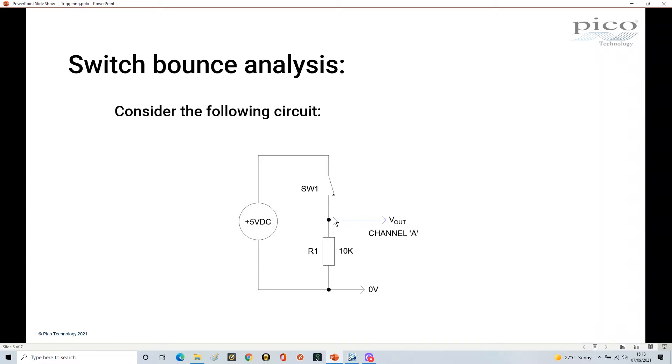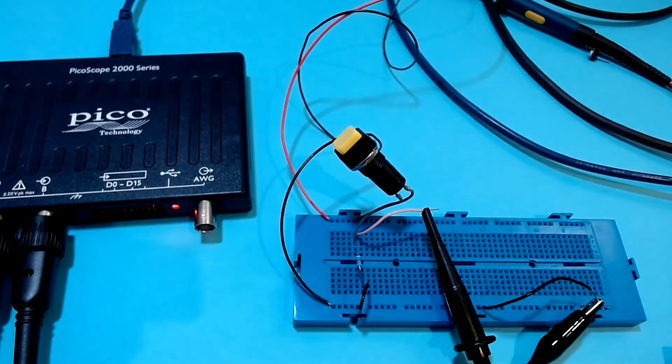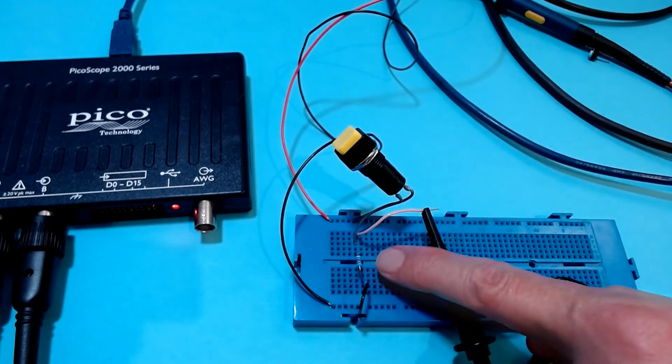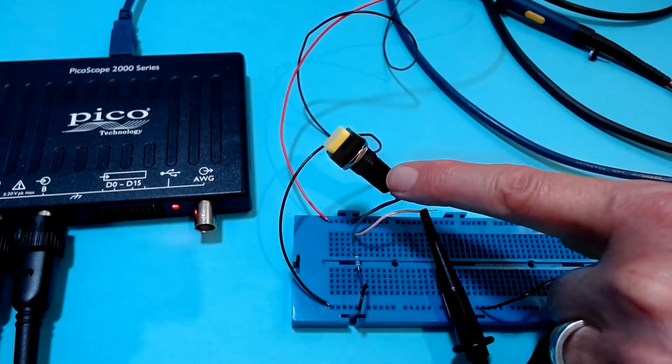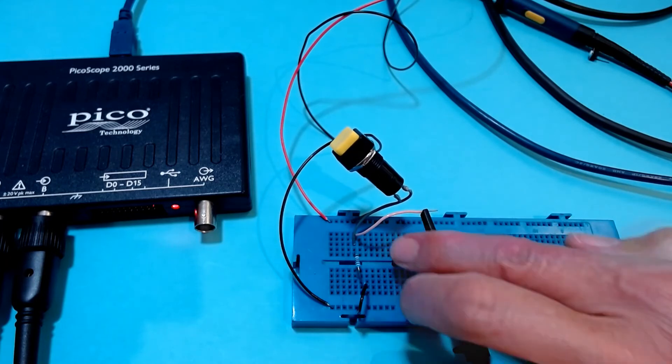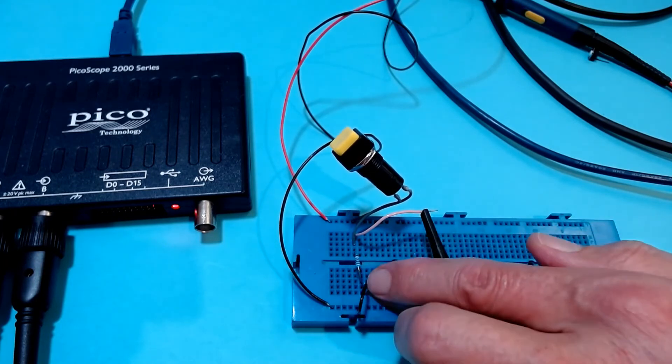We can monitor what's happening and look at it from a bounce perspective. So let's see that in reality. Here's the circuit - here's my five volt supply going in, this is my 10k resistor, this is my switch that I've just wired up, and I've got my scope probe effectively across the 10k resistor like that.